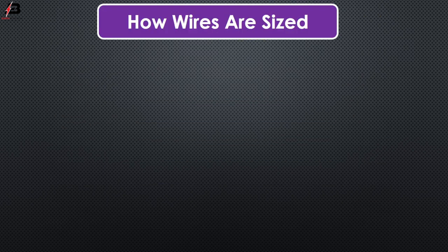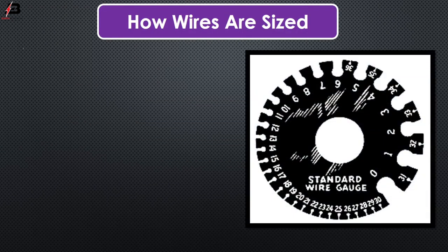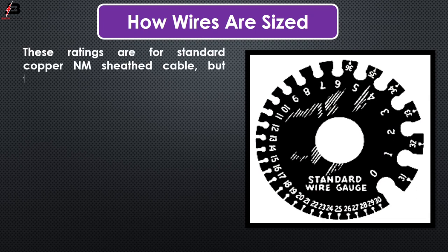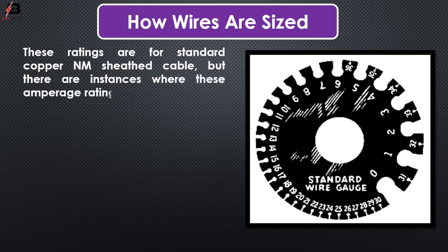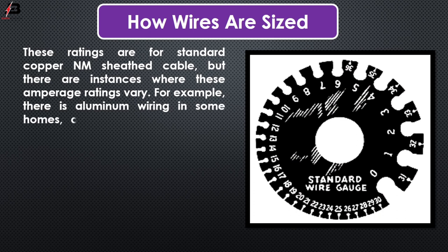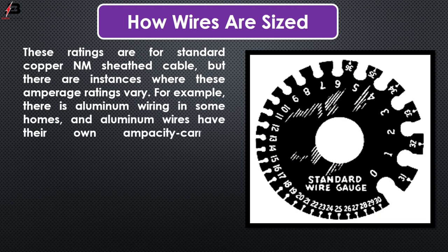These ratings are for standard copper sheathed cable. For example, there is aluminum oil in some homes, and aluminum oil has its own amp electricity carrying capacity.